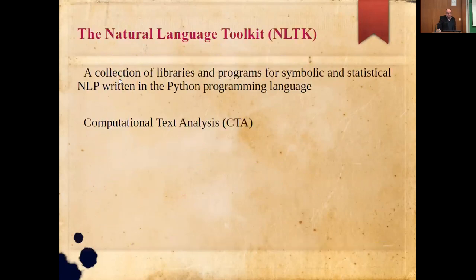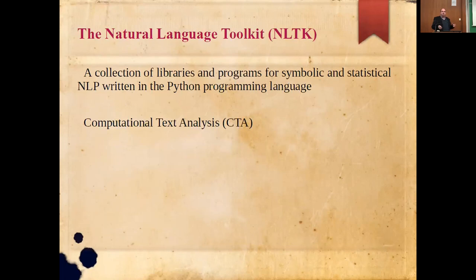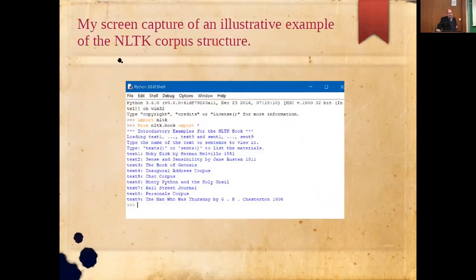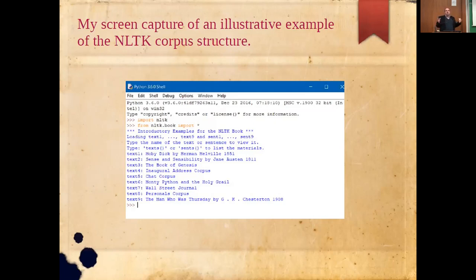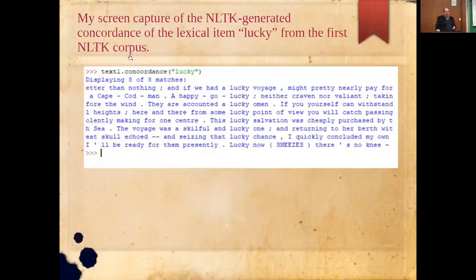The third free software tool is NLTK — the Natural Language Toolkit — which represents a collection of libraries and programs for symbolic and statistical NLP written in Python for computational text analysis. This is a screen capture of illustrative examples of the NLTK corpus structure. To import, you type 'import nltk', then 'from nltk.book import *', and you are provided with corpora that are a real treasure for linguists — all free of charge.